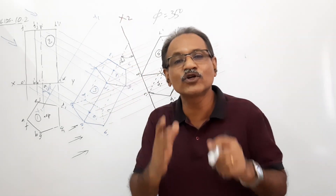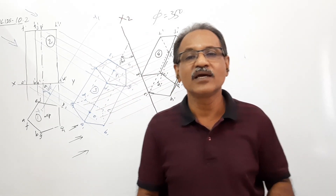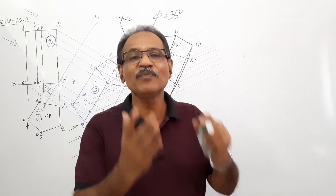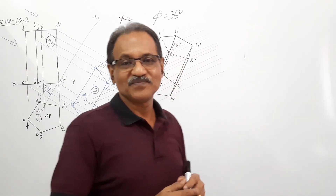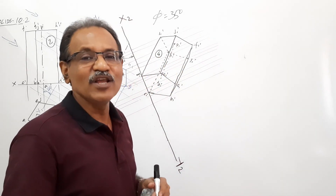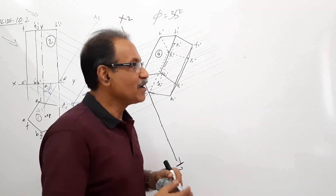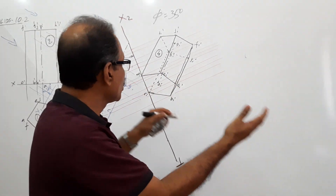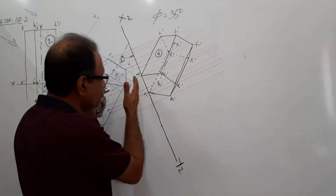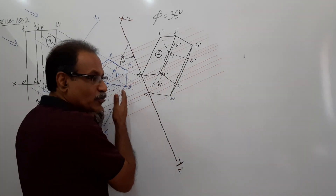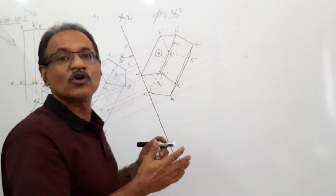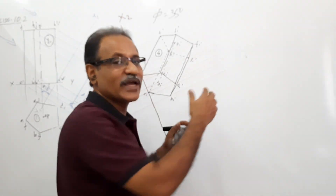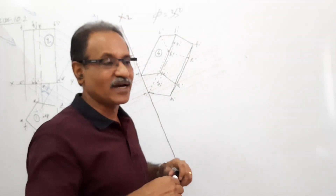How do you draw X2Y2 if you are given phi? Simple — you have to find out beta. Beta can be additionally found out, or the finding of beta can be incorporated in the drawing. I will advise you to go for an additional drawing to find beta.